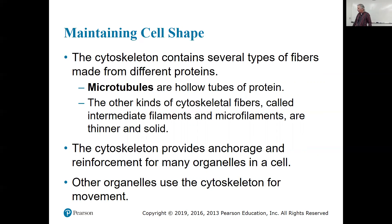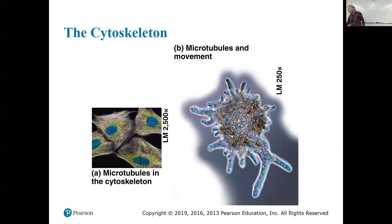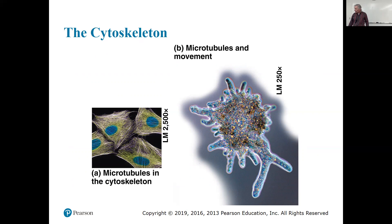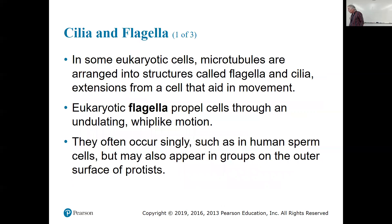Organelles use the cytoskeleton for movement — you can move organelles through a cell using microtubules. Some eukaryotic cells have microtubules arranged into flagella and cilia. These are extensions of a cell that aid in movement — either moving things over the surface of cells, or actually allowing a cell to move with a flagellum. Eukaryotic flagella propel cells with an undulating whip-like motion, and they are also membrane-bounded organelles.